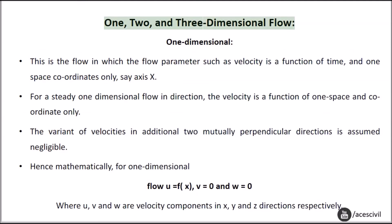One, two, and three-dimensional flow. One-dimensional: This is the flow in which the flow parameter such as velocity is a function of time and one space coordinate only, say axis x. For a steady one-dimensional flow in a given direction, the velocity is a function of one space coordinate only. The variation of velocities in the other two mutually perpendicular directions is assumed negligible. Hence mathematically, for one-dimensional flow: u = f(x), v = 0 and w = 0, where u, v, and w are velocity components in x, y and z directions.